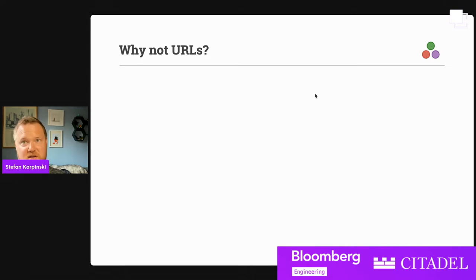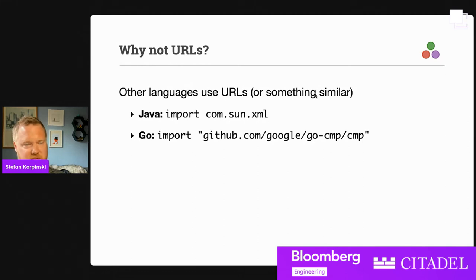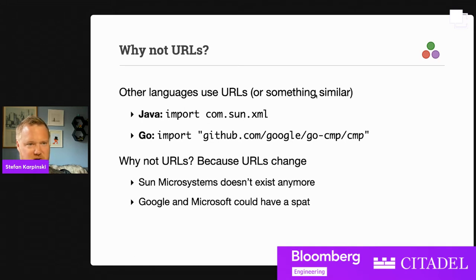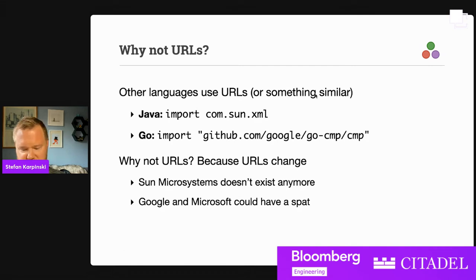So why not URLs? Some other languages do this — Java does import com.sun.xml. That's a well-trod path. One problem is that URLs change. Sun Microsystems doesn't exist anymore. Google and Microsoft could have a spat and Google could decide that hosting the GoCMP package on GitHub is something they don't want to do anymore. Then this URL would have to change and you'd have to go back and update your code, even though it shouldn't change — it should be permanent.